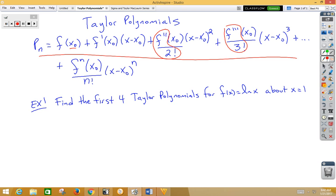We start off with our function, which is f of x is the natural log of x, and we're going to do some derivatives. The first derivative would be 1 over x. Our second derivative would be negative 1 over x squared. Our third derivative would be 2 over x cubed.